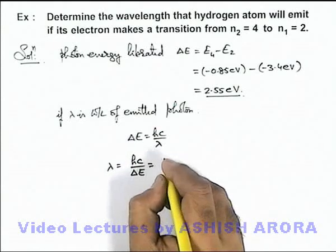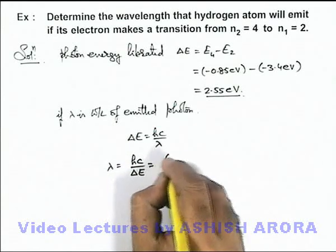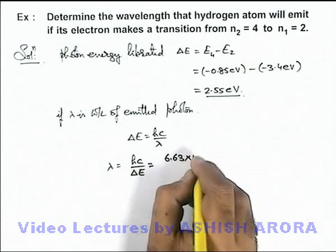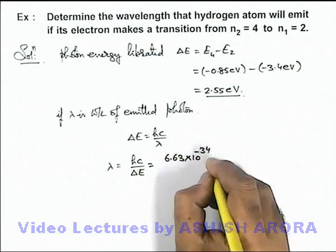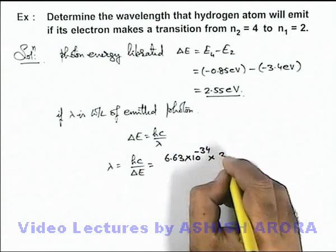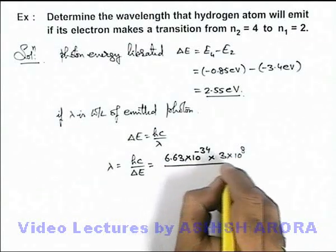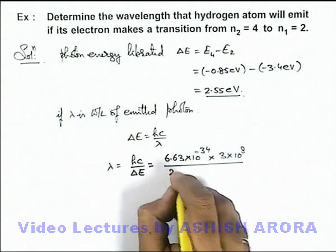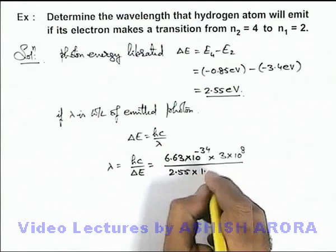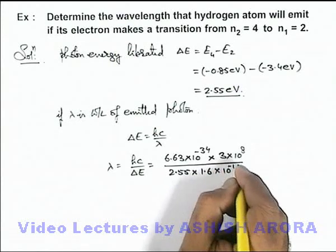If we substitute the values, this will be h is 6.63 × 10⁻³⁴ multiplied by speed of light 3 × 10⁸, divided by the energy 2.55 × 1.6 × 10⁻¹⁹.